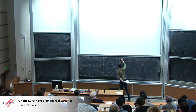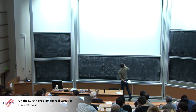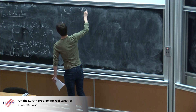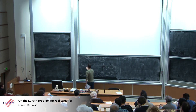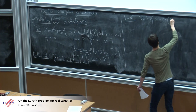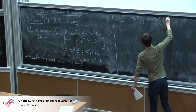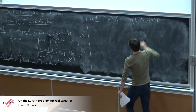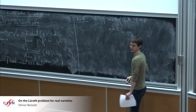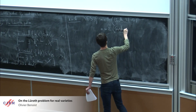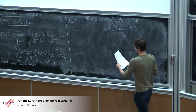Let me first look at this question over the complex numbers. Denoting by n the dimension of X, the answer is positive for curves — this is an easy theorem due to Lüroth, 1876 — or if n equals 2, which is a difficult theorem of Castelnuovo, 1894.